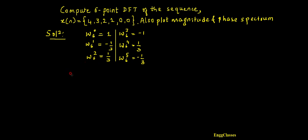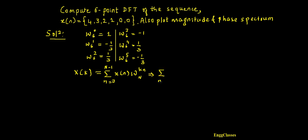Once we know these things, we can start with the solution by writing the expression for DFT. X of k is equal to summation n equals 0 to N minus 1 of x(n) times WN to the power k times n. Substituting for the 6-point DFT, capital N is 6, so the upper limit is 5, giving W6 to the power k times n.